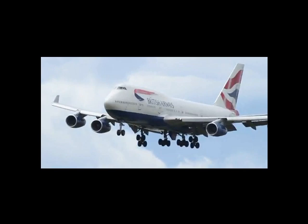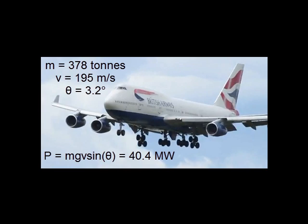Finally, the Boeing 747's mass is about 378 tons, its cruising speed is around 195 meters per second, and the angle it makes with the horizontal when it glides is about 3.2 degrees. Hence, we can calculate the power to be about 40.4 megawatts.